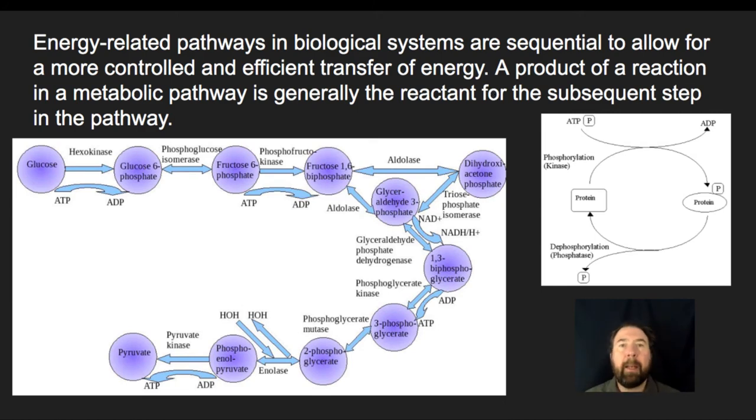All right, so energy related pathways in biological systems are sequential to allow for more controlled and efficient transfer of energy. A product of a reaction in a metabolic pathway is generally the reactant of the subsequent step in a pathway. So one of the things to keep in mind is that when you see a metabolic pathway, and in this case what I've done is I've brought up glycolysis. Glycolysis is the breaking of glucose down to form pyruvate. What we're going to see here is that in each step of the process as we move from glucose to glucose 6-phosphate to fructose 6-phosphate we're going to see a process taking place.